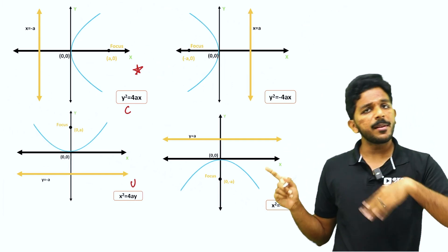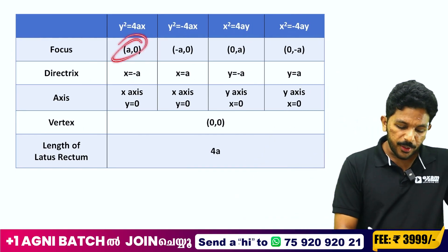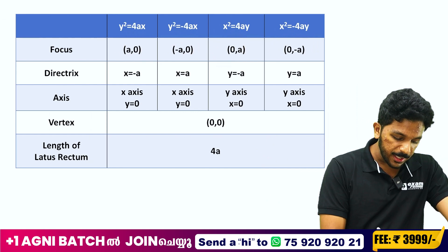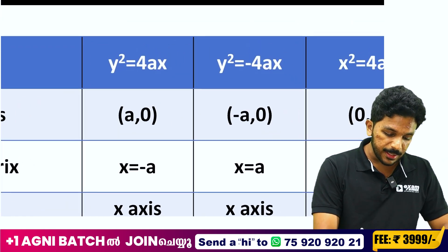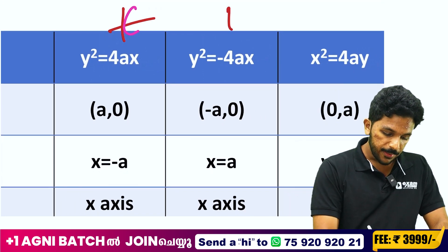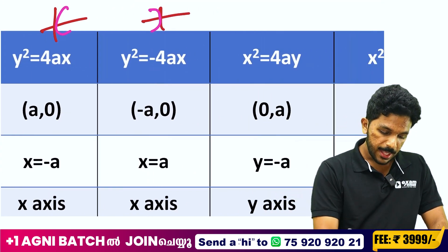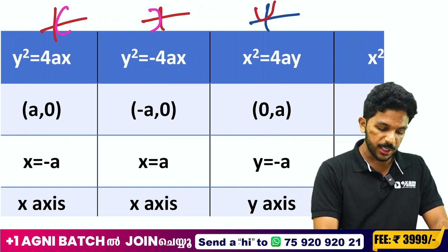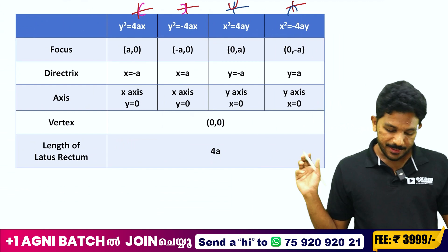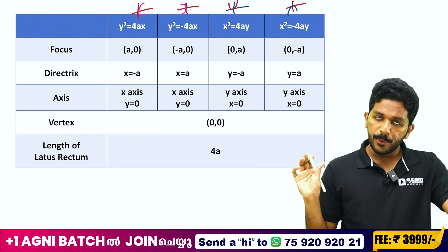To summarize: y² equations give C-shape or reverse C-shape, with x-axis as axis of symmetry. x² equations give U-shape or reverse U-shape, with y-axis as axis of symmetry. If y² has a minus, it is the reverse C-shape. If x² has a minus, it is the reverse U (ra) shape. The vertex is at the origin for all standard forms.